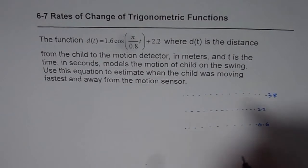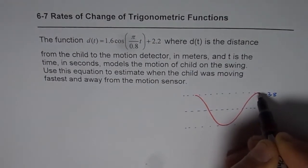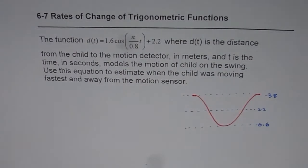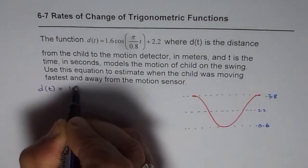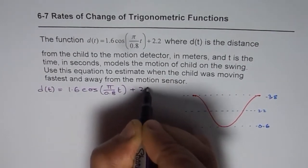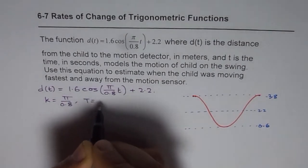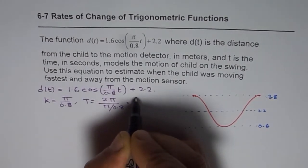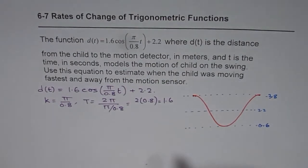Now the function should be, it's a cosine function so it starts with the maximum. So the function could be kind of like this. Let's calculate the time period for this function. d(t) = 1.6 cos(π/0.8 t) + 2.2. So here k = π/0.8. So T = 2π/(π/0.8). Pi cancels, so we get 2 × 0.8 which is 1.6. So the time period is 1.6.